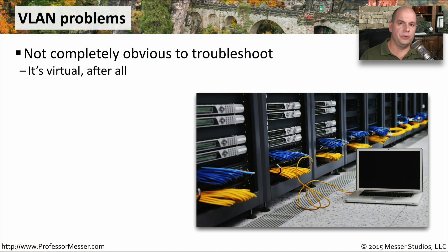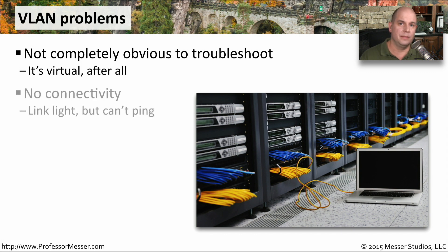VLAN configuration issues can be challenging to troubleshoot. You can't see the VLAN on your local device — all of the VLAN configurations are done on the switch. Every interface on the switch is assigned to a VLAN, and if you're connecting to an interface that is assigned to the wrong VLAN, you may run into problems.